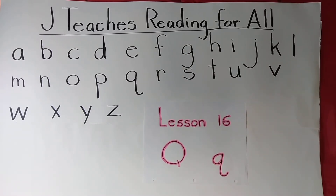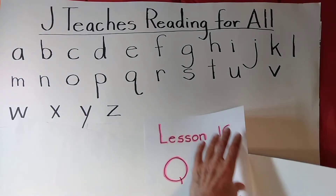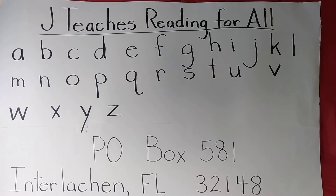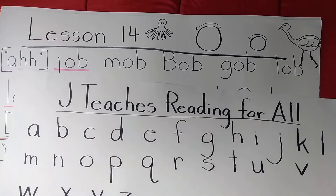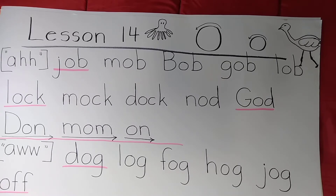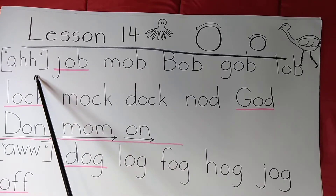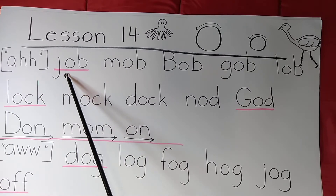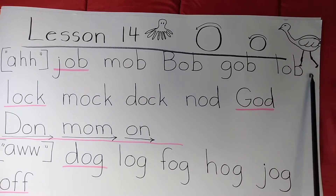All right, now let's review the words. We'll begin our review with Lesson 14, going back two lessons. As mentioned, O has two sounds for the short vowel sounds. One is ah-octopus, and these words that we're starting with have that ah-octopus sound, and the entire first line of words rhyme.